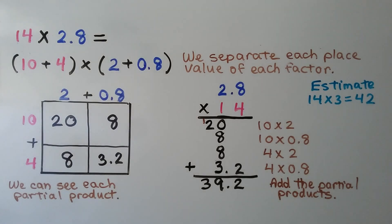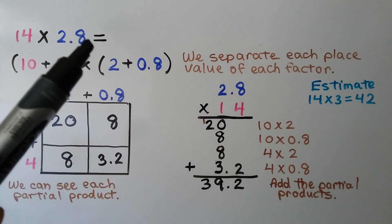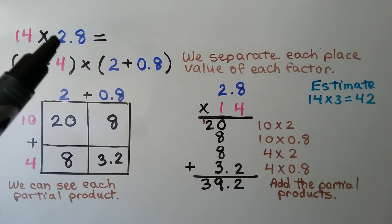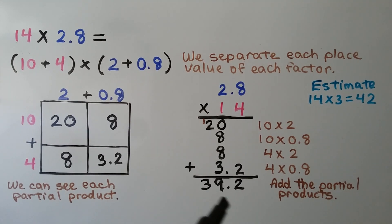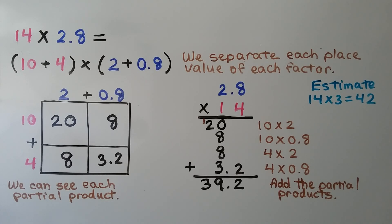We could estimate this as 14 times 3 — the 8 would tell the 2 to round up to a 3. And 14 times 3 is equal to 42, which is very close to what we got as 39 and 2 tenths. So our answer, our product, is reasonable.